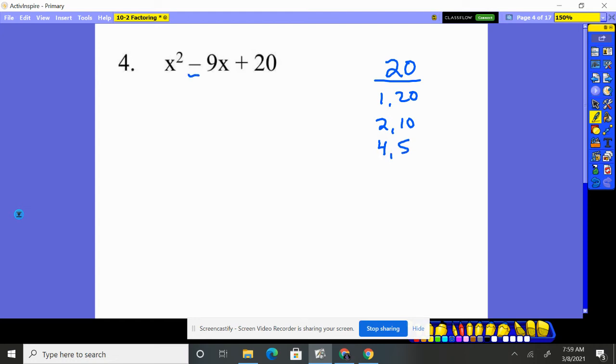However, notice this is negative. Now remember, to create a positive 20, either both pieces are positive, or they both could be negative. If they were both positive,